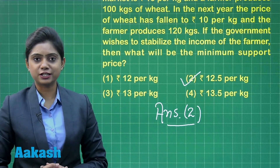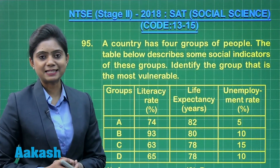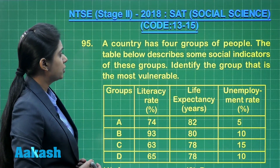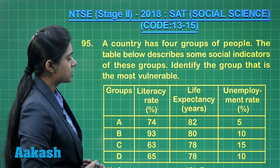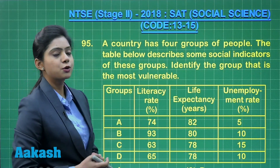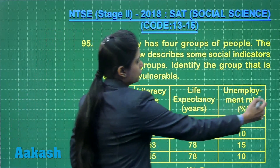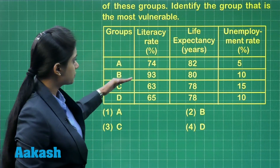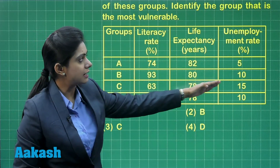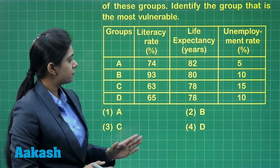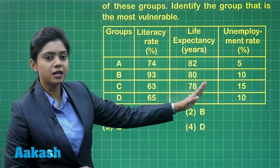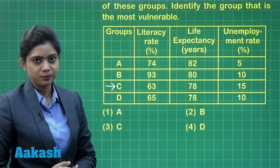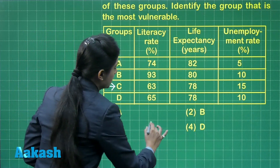Now let's move on to question number 95. A country has 4 groups of people. The table below describes some social indicators of these groups — literacy rate, life expectancy, and the unemployment rate. We need to identify the group that is most vulnerable. When we analyze the data given, clearly it is group C which is most vulnerable, so we will mark our answer as option number 3.